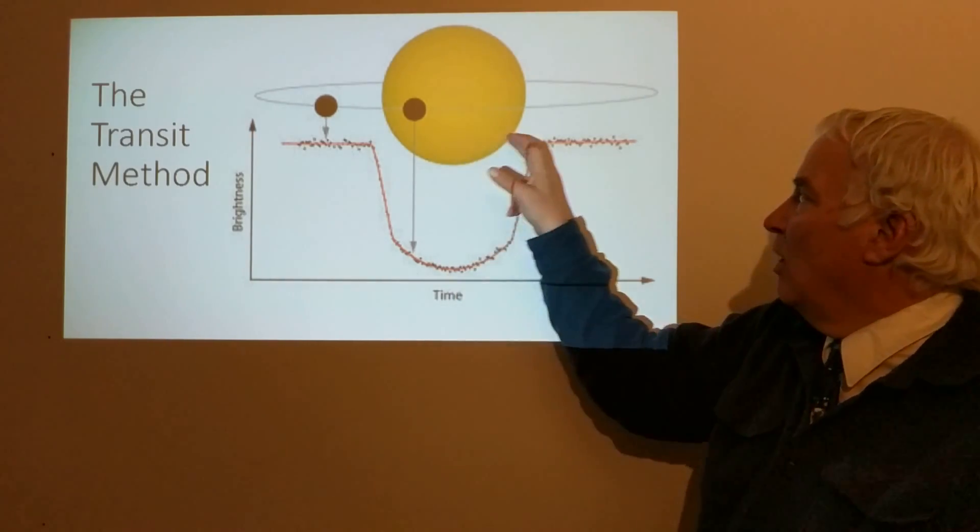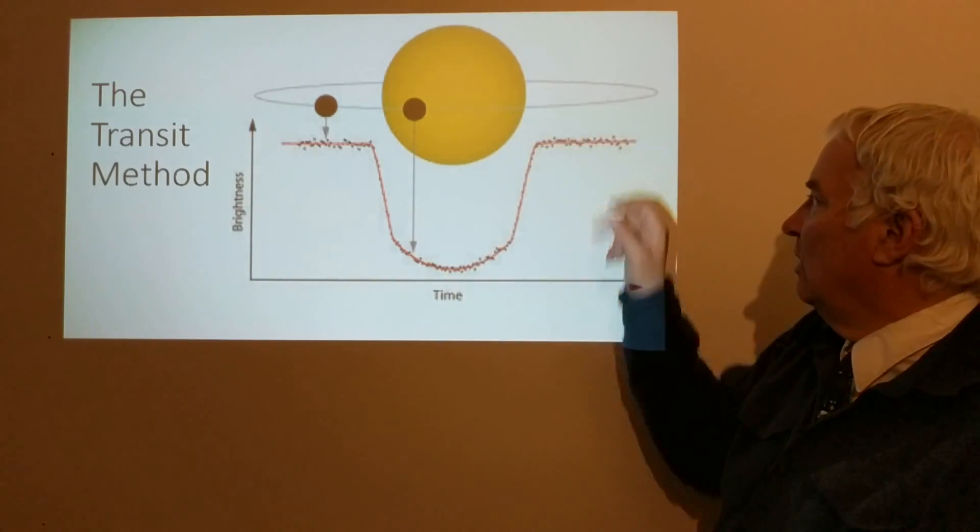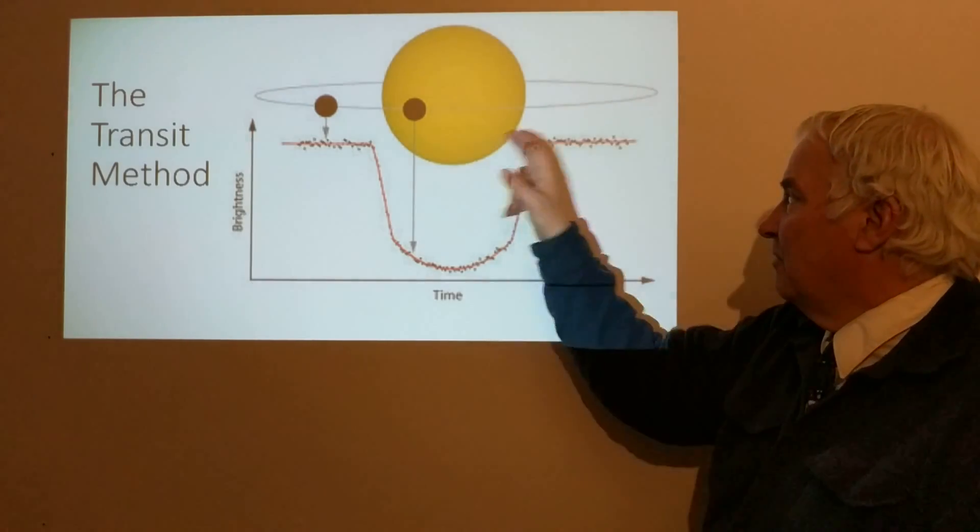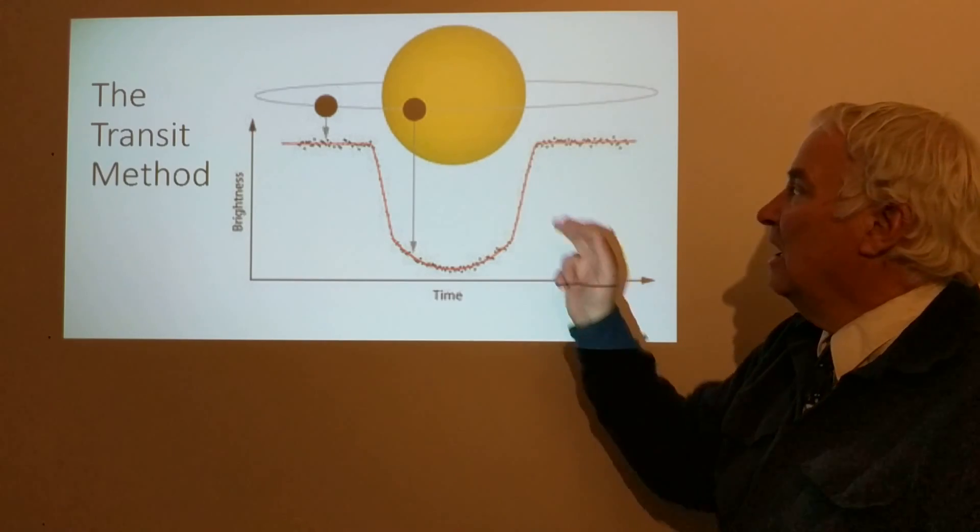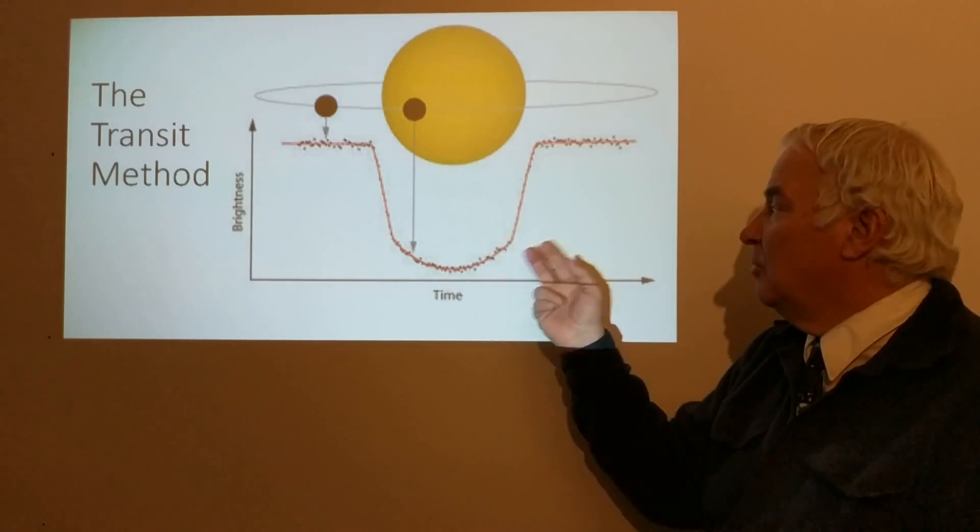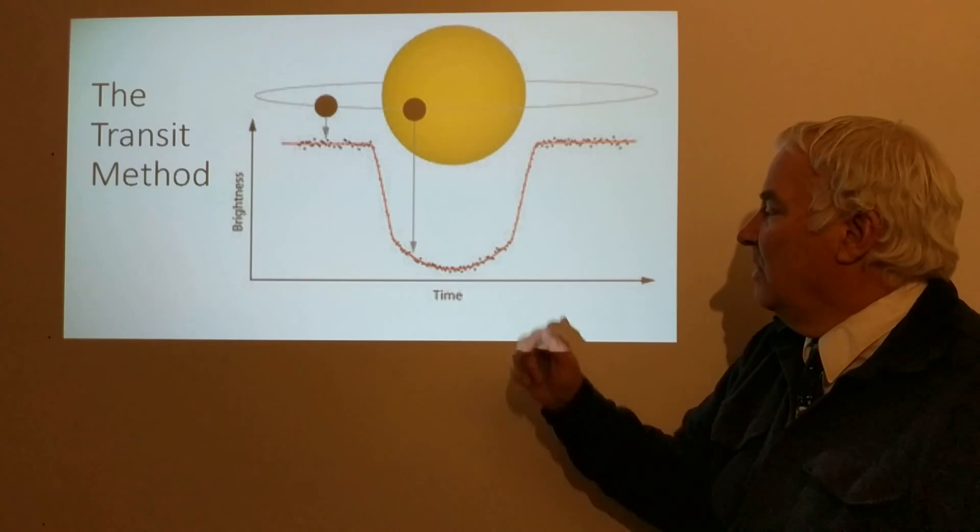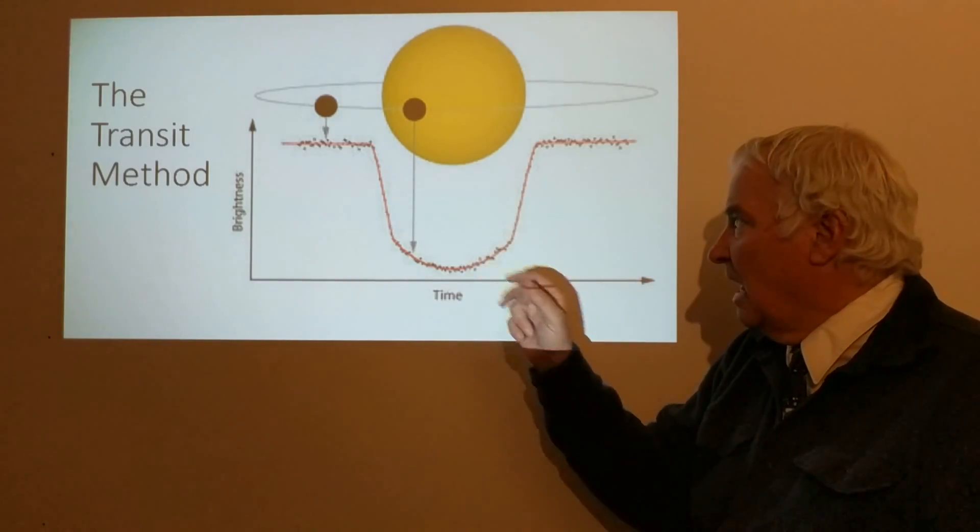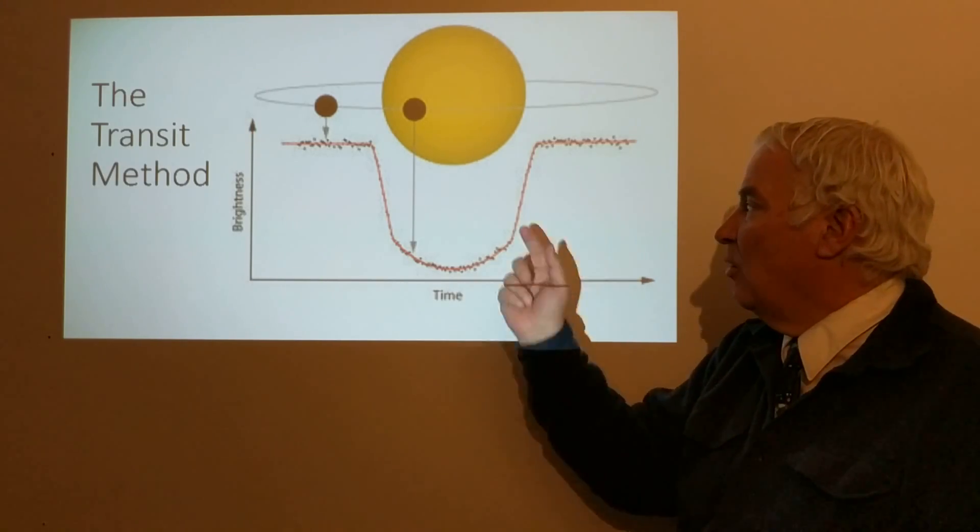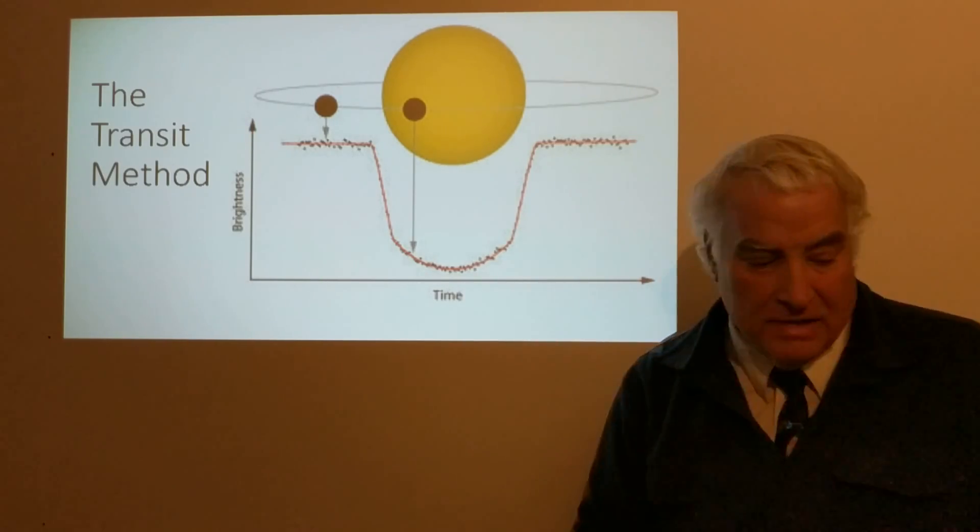Once the planet orbits around, it will then come out from in front of the star, go behind the star, come in and do it again. If this happens on a very repeatable timescale, this can be confirmed as an exoplanet and the period of the orbit can be measured.